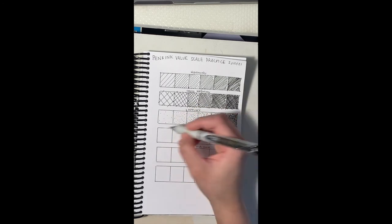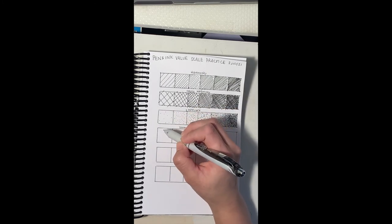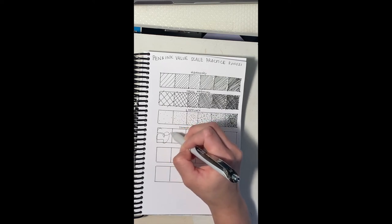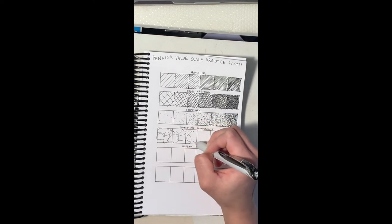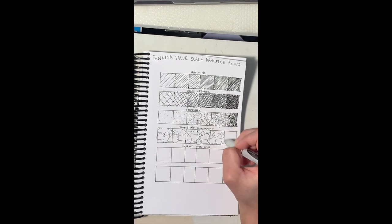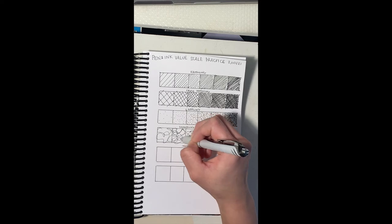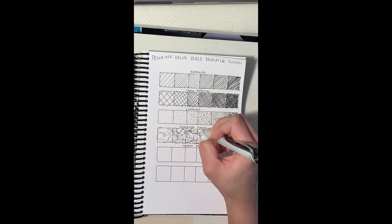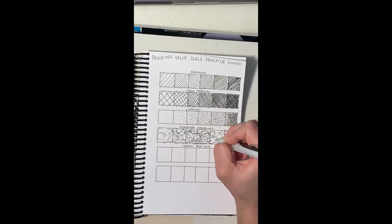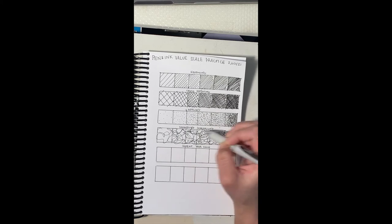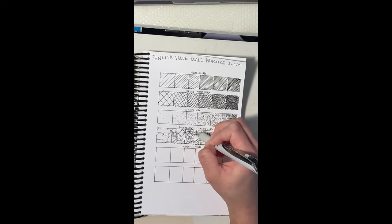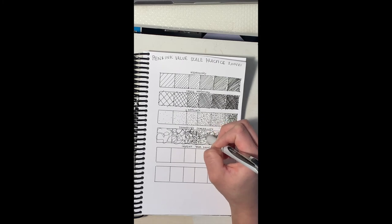And now you get scumbling or scribbling, which is really fun. And I'm building this up across the entire value scale, similar to how we did for our pencil value scales. So the same line, and now I'm adding another layer of scribbles or scumbling. And then another. And I just continue like this.